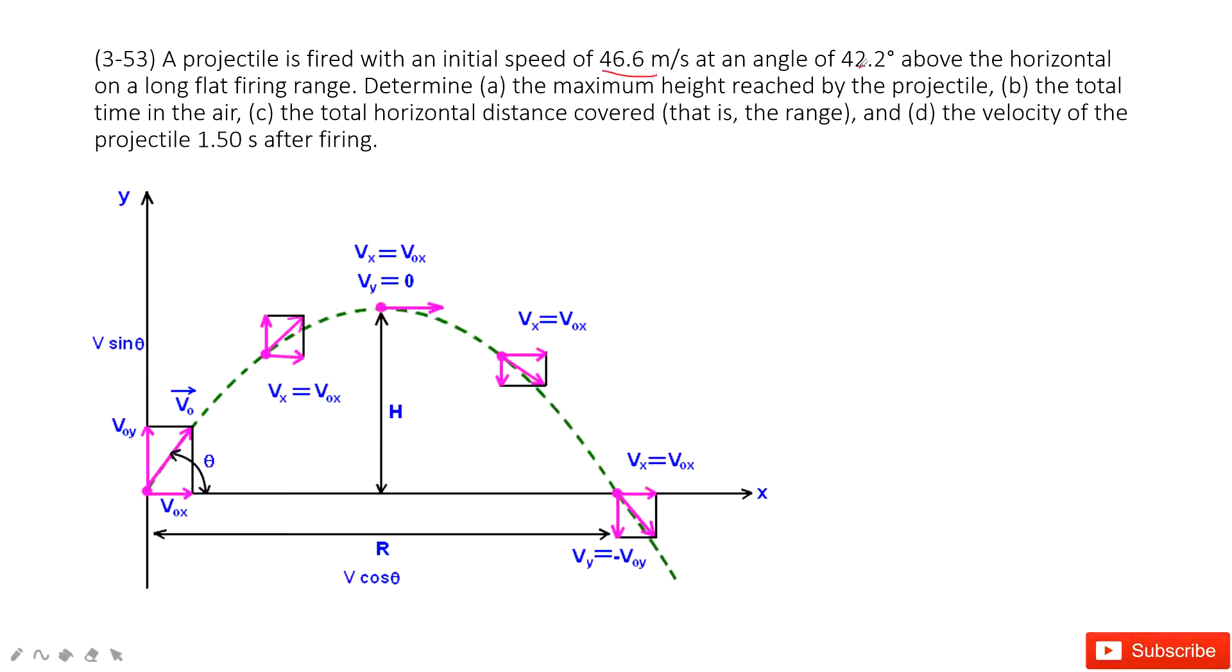This one is still projectile motion. We know the initial velocity and angle theta. So in this way, we can project the velocity into x-component and y-component: V0x, V0y, right?